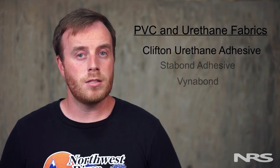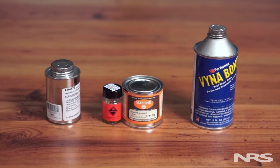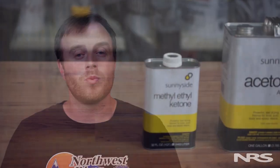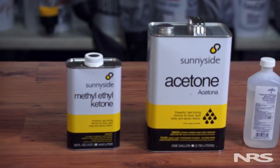If you're working with PVC or urethane fabrics, you can use Clifton's urethane adhesive, Sta-Bond, or Vinabond. Basic mechanical and chemical prep for these glues is the same. You'll want to use 180-grit sandpaper and clean the surfaces with MEK or acetone. Alcohol can also be used here, however it doesn't work as well.